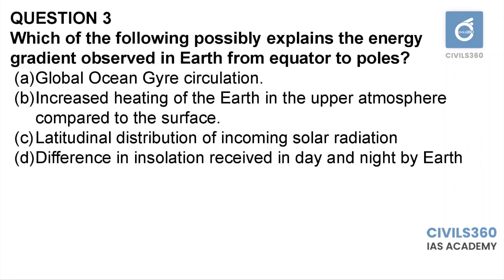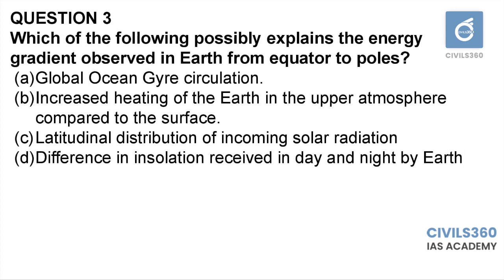Third question asks which of the following possibly explains the energy gradient observed on Earth from equator to poles. The equator and tropics are energy surplus areas, while temperate and polar regions receive less solar radiation. Option C — latitudinal distribution of incoming solar radiation — is the best suited explanation.